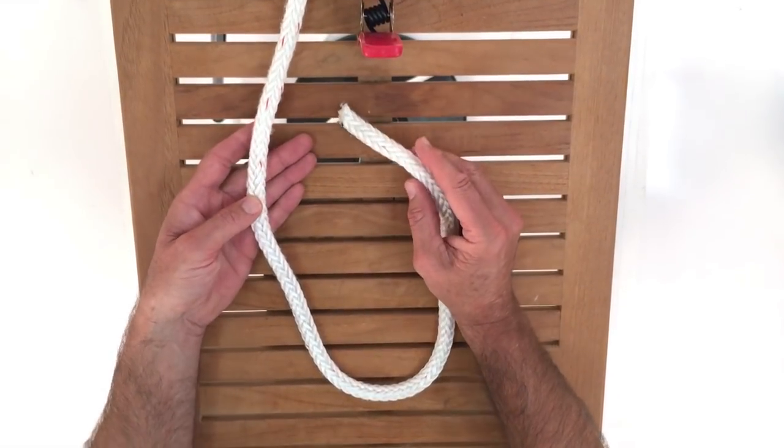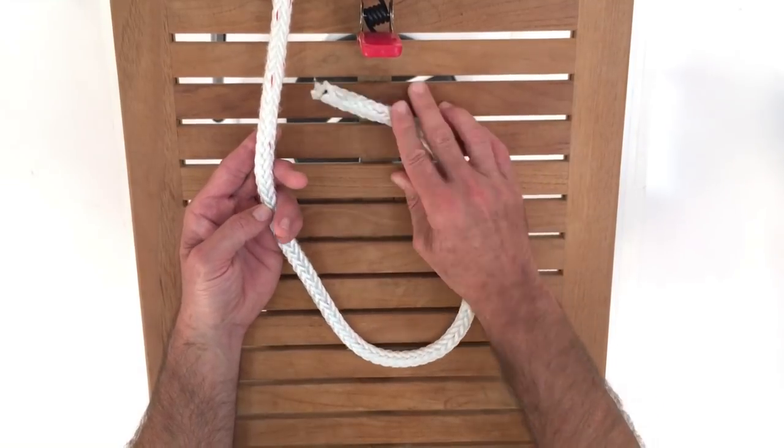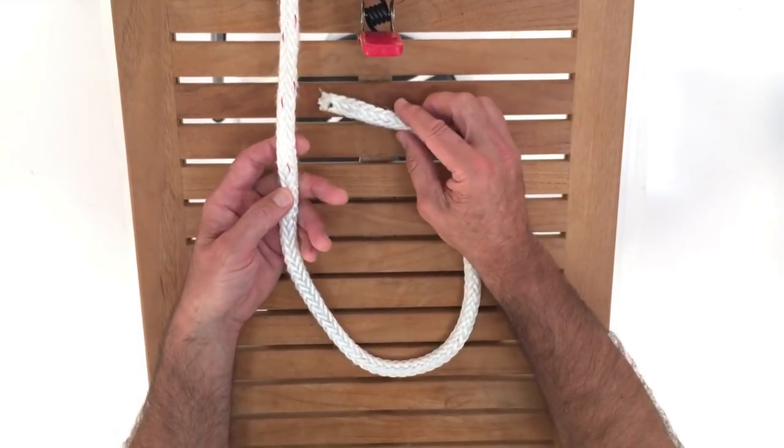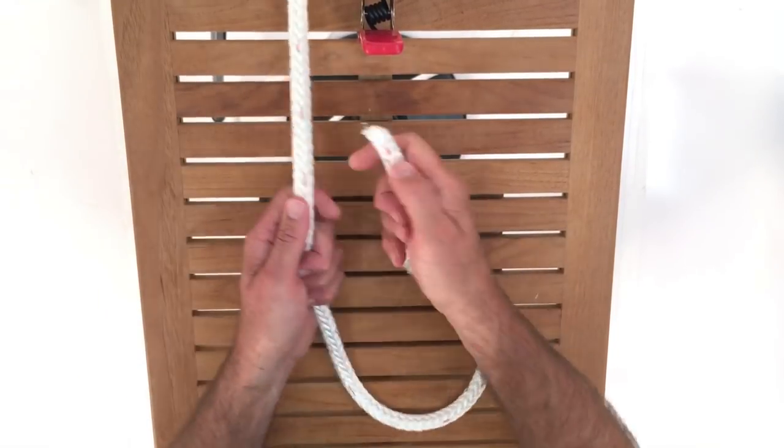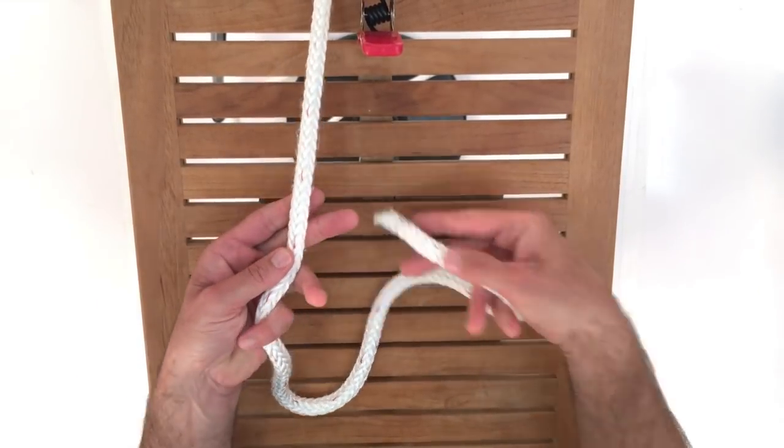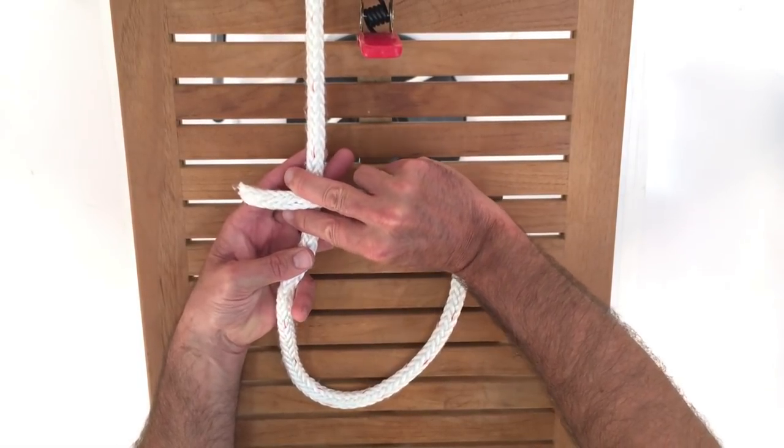The first bowline I'm going to show you is when you want to put a loop in the end of a line. Say, turn this into a dock line, and it's totally black and dark out. So I'm going to feel my way around. I've got the line. I can feel how big the loop's going to be. So first thing I'm going to do is I'm going to cross the line over with my two fingers holding the line. That's my guide.